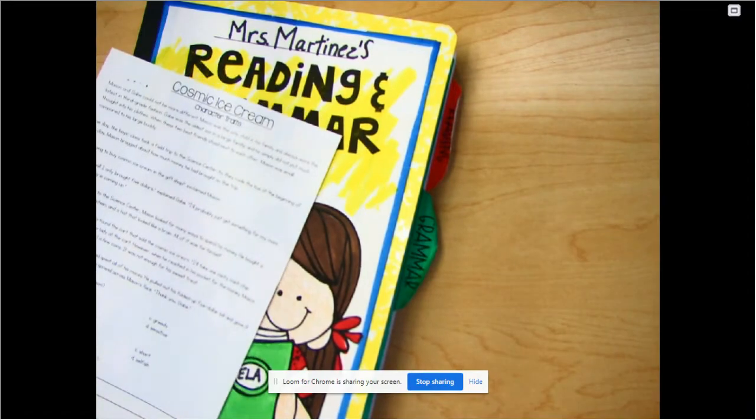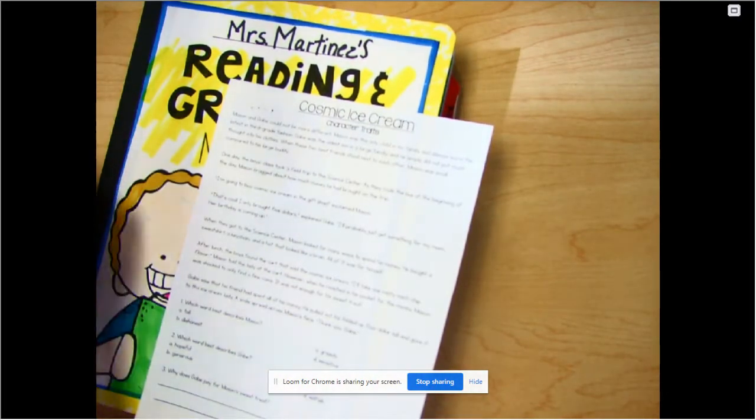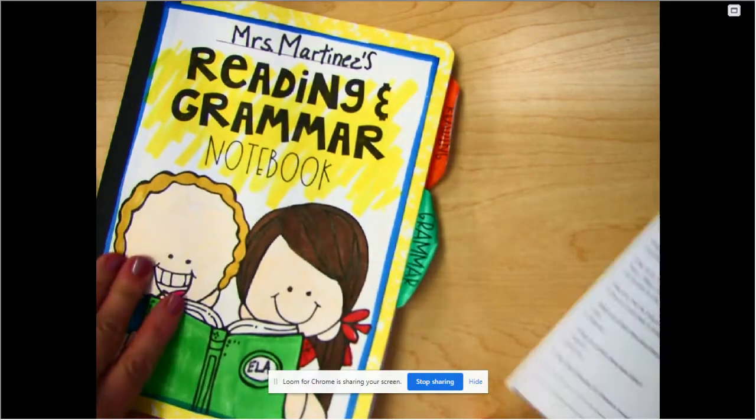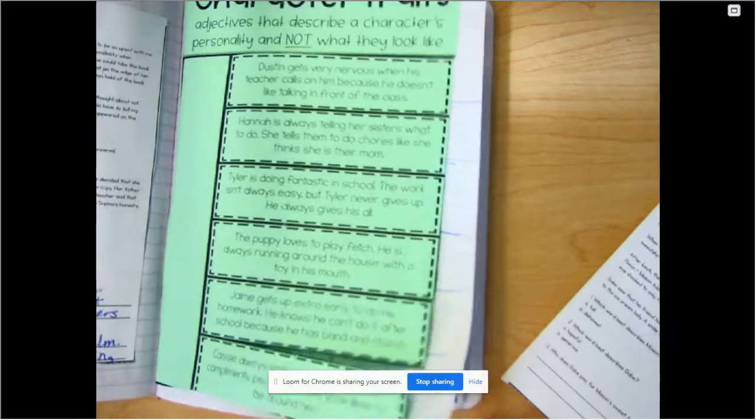Okay, so just that many cuts and we just need our glue. We're going to go back here to reading, the reading tab. We have these pages with the blue character traits, and now we're going to glue this in on the back side of that character traits page.